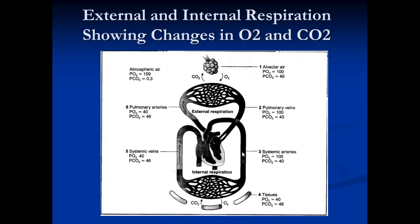This diagram explains how a concentration gradient is set up. Starting with the pulmonary arteries — these are the blood vessels going to the lungs, coming back from the tissues that have been respiring. They have a high partial pressure of carbon dioxide and a reasonably low partial pressure of oxygen, because the cells have been respiring: they have made CO2 and used up the oxygen.